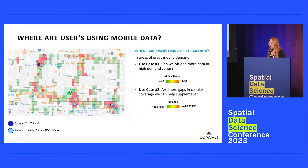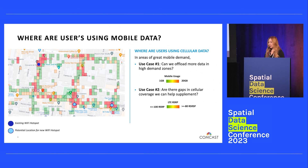For our first use case — can we offload more data in high demand zones? — imagine these quad bins as aggregated mobile usage, green being low and red being high. In the upper left corner, we already have an existing Wi-Fi hotspot doing its job to capture high mobile usage. However, in the bottom right corner, there are two other locations where we can spin up hotspots to capture more data onto our network, resulting in savings for customers by reducing cellular data traffic.